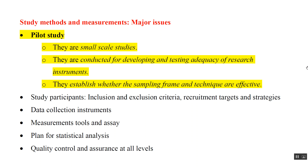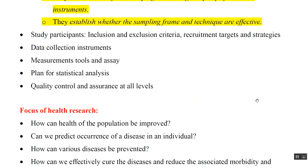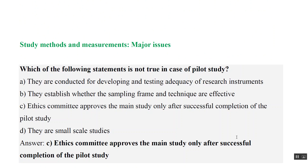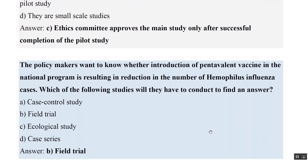Now let us see some of the exam questions. Which of the following is NOT true in case of a pilot study? Option A: they are conducted for developing and testing adequacy of research instruments — that is correct. Option B: they establish whether the sampling frame and technique are effective — also true. Option C: the ethics committee approves the main study only after successful completion of a pilot study — that is NOT true. It is not necessarily compulsory to do a pilot study before putting your protocol to ethics committee approval. So C is the correct answer. Option D: they are small-scale studies — that is again true.